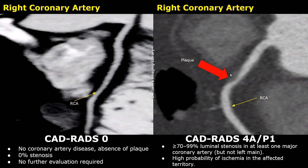Almost the entire lumen is narrowed, but a small portion is open, and the enhancement distal to the stenosis is normal.